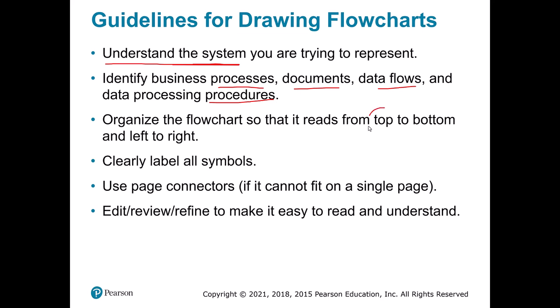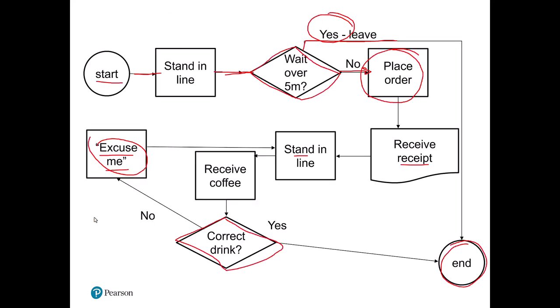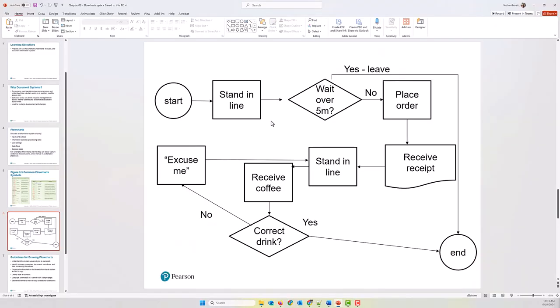It is helpful to sort of read it like a document. So, you want to go from top to bottom and you want to go from left to right. We want to label everything. If you can't fit in a single page, use the page connectors. And then you're going to do a lot of editing and reviewing of it. So, with this system over here, just trying to get it all to lay out nicely on the page, I rearranged it once or twice and just kind of played with it.